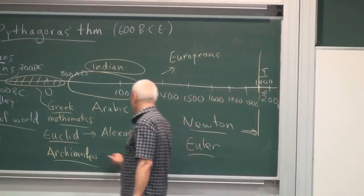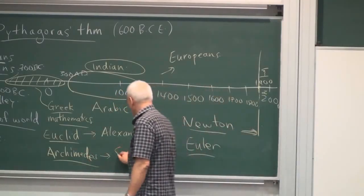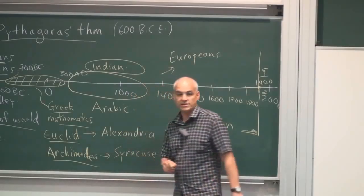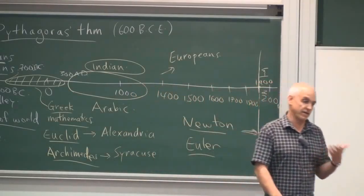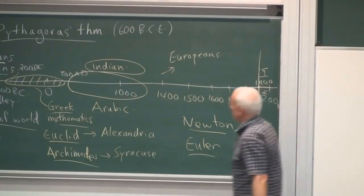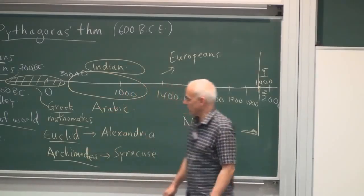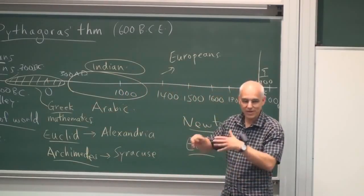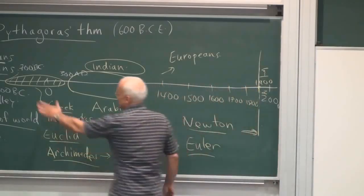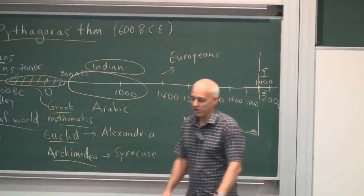And Archimedes spent a lot of time in Syracuse, which is in present-day Sicily, an island off of Italy. And a lot of these mathematicians also traveled rather widely, so it's really a Greek language, culture, or tradition. And there's various portions of it, there's an early and a middle and a late period.